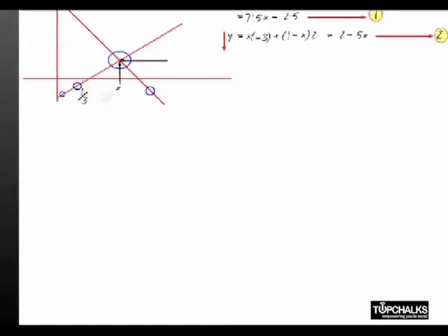So if I try to solve these two equations, 7.5X minus 2.5 equals 2 minus 5X, I will find that X is equal to 9 by 25. If X is equal to 9 by 25, 1 minus X correspondingly is equal to 17 by 25. And at this point we find that the return on investment, that is Y, equals 0.2%.